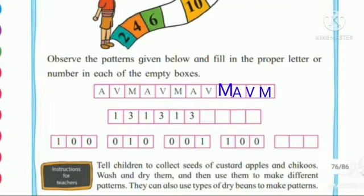See the next boxes — numbers are given: 1, 3, again 1, 3, again 1, 3. What will be the next? We will write 1, 3 and again 1, 3. This is our correct pattern.